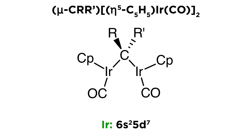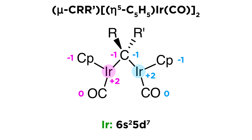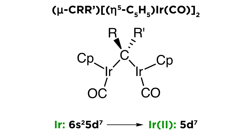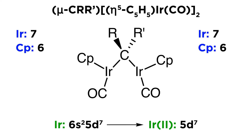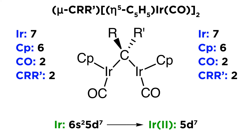Iridium is 6s²5d⁷, so it has nine valence electrons. The carbonyl is neutral, the Cp ligand has a minus one charge, and the alkylidene ligand has a minus two charge, which is distributed amongst the two metals because it is a bridging ligand, so we can think of it as minus one going to each metal. That's a total of minus two to each metal, so they must each be in the plus two oxidation state, since the complex is neutral overall. Nine valence electrons minus two is seven. The seven from the metal, plus six from the Cp ligand, plus two from the carbonyl, plus two from the alkylidene — since its four electrons are split up between two metals — gives us a total of seventeen electrons surrounding each iridium center. Therefore, we simply add one bond between the metals, and that will bring us to eighteen for both of them, and we end up with this structure resembling a three-membered ring.